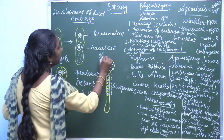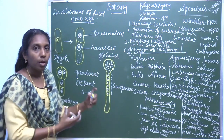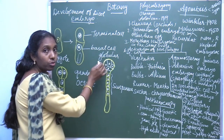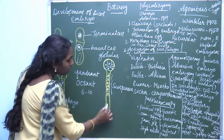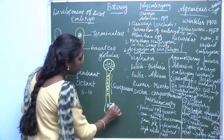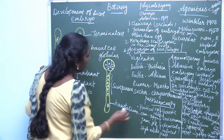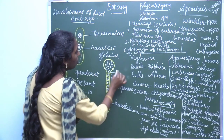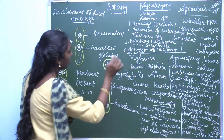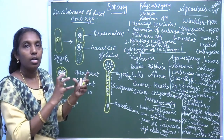In the globular stage, the suspensor helps to push the embryo deeply into the endosperm. The uppermost cell of the suspensor is elongated and enlarged, becoming the haustorium. The lower most cell is called the hypophysis. This is the suspensor, and this is the embryonal mass.